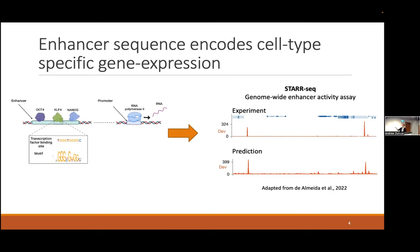This is an example from a recent Nature paper showing, for a given region of the genome, the experimental measurements from STARseq compared to neural network predictions — and we can see it's doing quite well. So in our lab, we study mouse embryonic stem cells, and we wanted to see whether neural networks trained on these embryonic stem cell enhancers are learning the biology we expect them to, and not just random uninterpretable things.